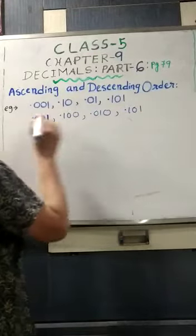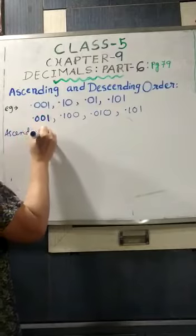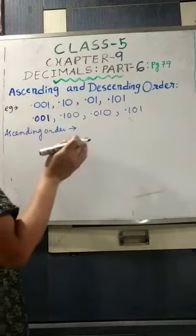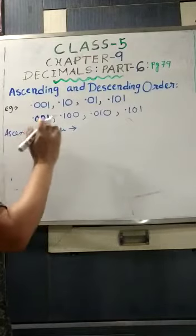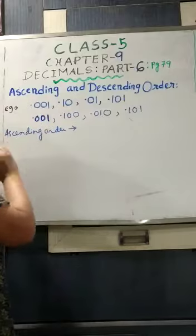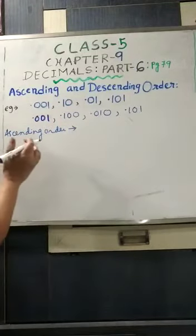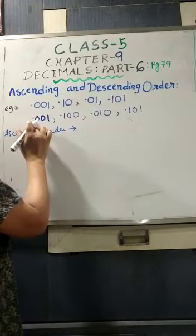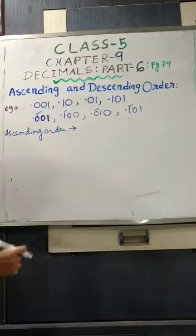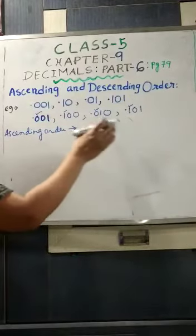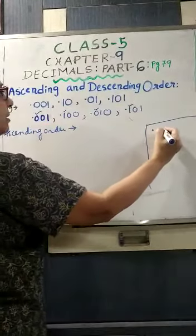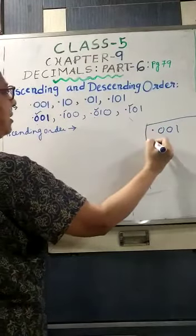Now we will arrange these numbers in ascending order. While comparing numbers as greater or smaller, we will move from left to right. Here there are no whole numbers — no numbers before the decimal point — so we will start comparing with the first position, that is the tenths place. The first number has 0, the second has 1, the third has 0, and the fourth has 1. As 0 is smaller than 1, and we are arranging from smaller to bigger order, we will take the smaller numbers first: 0.001 and 0.010.